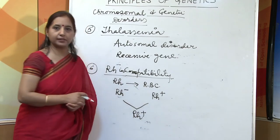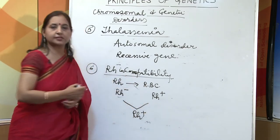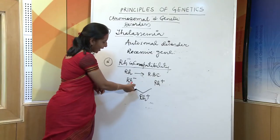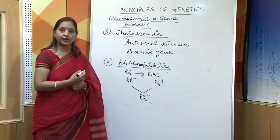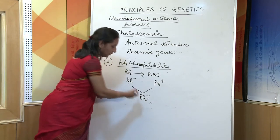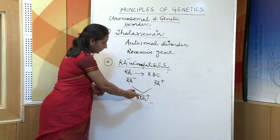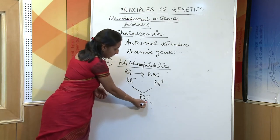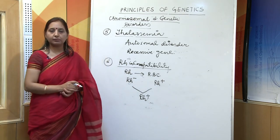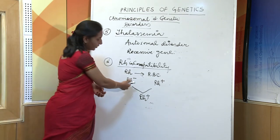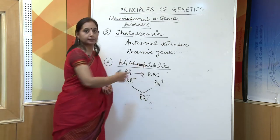The next disorder is Rh incompatibility. Rh is the protein or antigen present on the surface of RBCs. If a Rh-negative mother marries a Rh-positive father, they may bear a child who is Rh-positive. There may be mixing of blood, and as a result, the antigen will boost the immune system of the mother and antibodies will be produced in the mother's body, leading to Rh incompatibility.